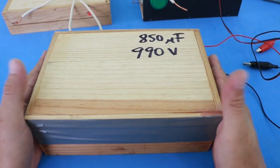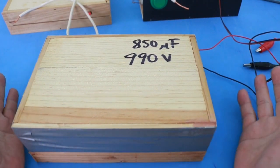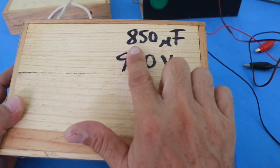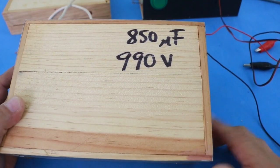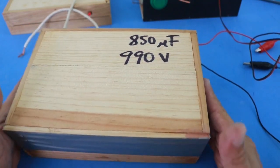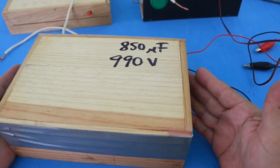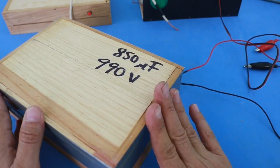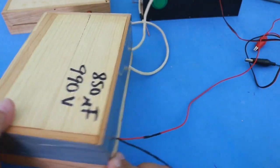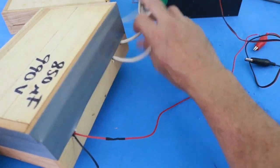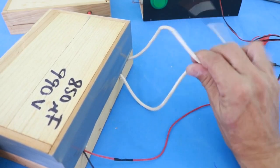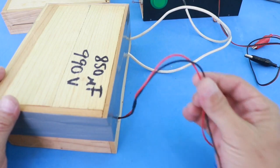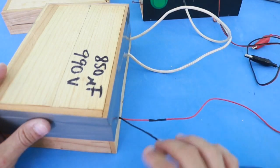The capacitor bank is where we store energy in order to discharge it at a later time. As we say, 850 microfarads at 990 volts. I put the bank inside this wooden box for security because discharge of this bank can be very dangerous. And at the back we have the two wires for the discharge and another two wires connected at the same points, but here we will charge the capacitor bank.